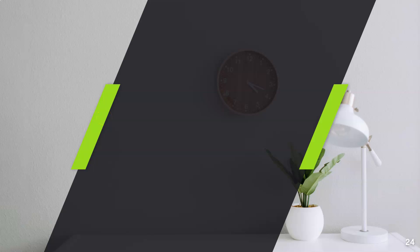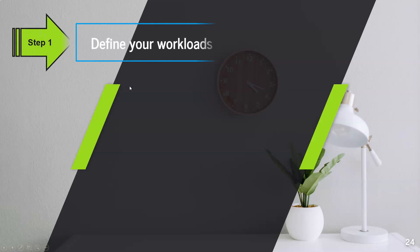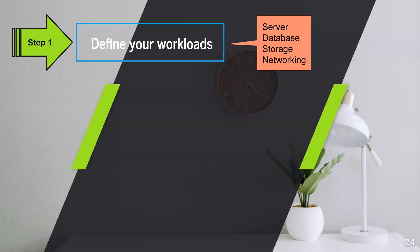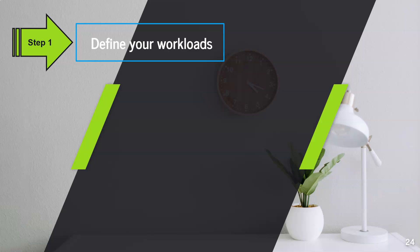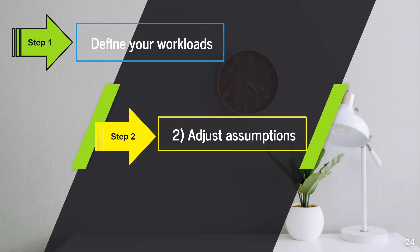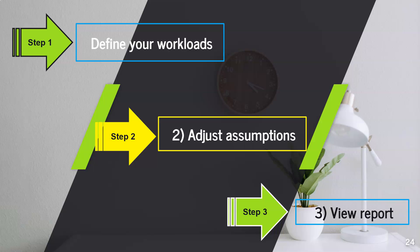It is a three-step process to calculate total cost savings using the TCO calculator. In step one, you define your workloads - you mention all your servers, server configuration, database, storage, and networking resources in your data center. In step two, you make adjustments to provide more accurate information. In step three, you see the exact cost savings over the period of time, with a comparison between your on-premises infrastructure and the cloud.